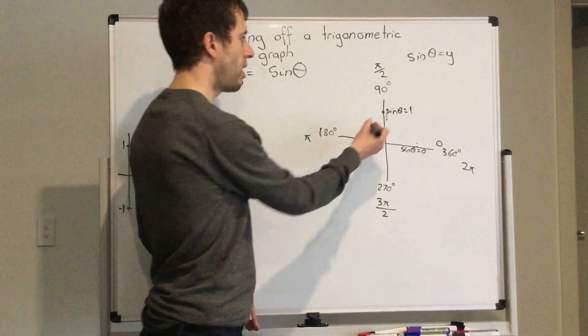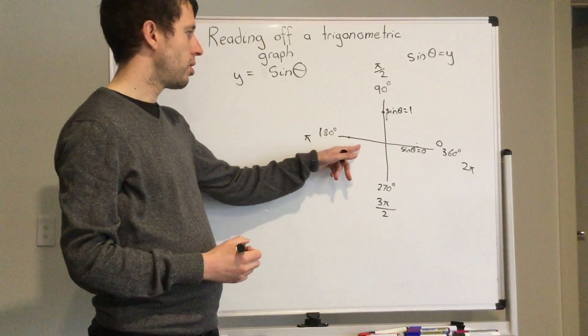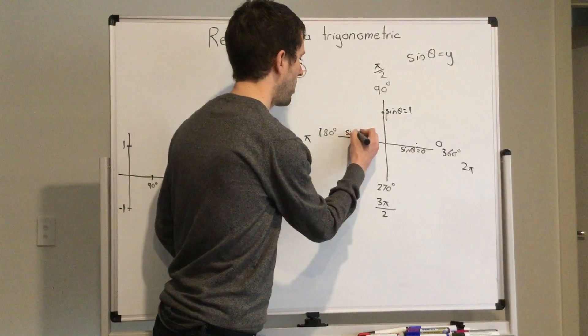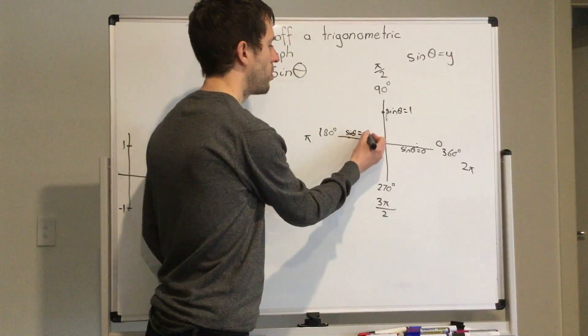Then when we get down here, see how it's going back down, the y-axis is going back down. So y has to be zero. At sine alpha when alpha is 180 degrees, we know that it's going to equal zero.